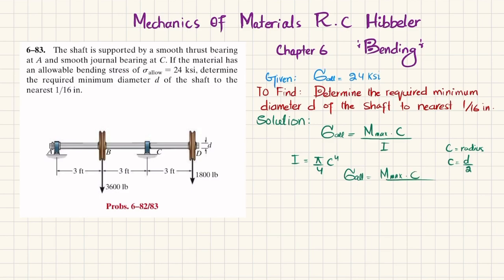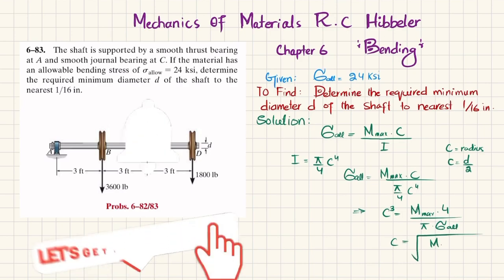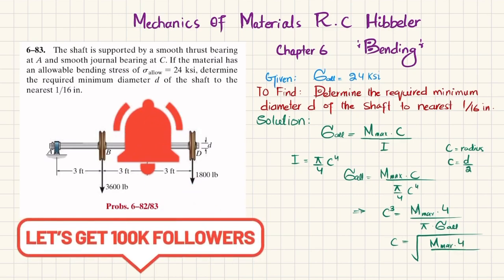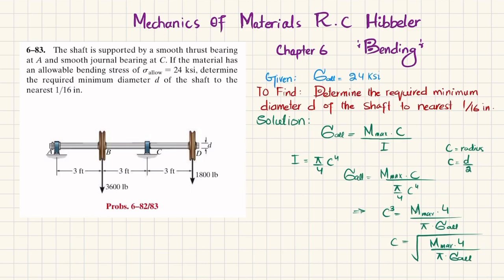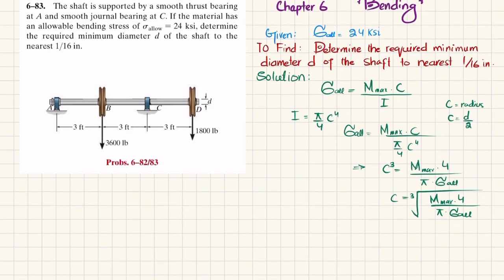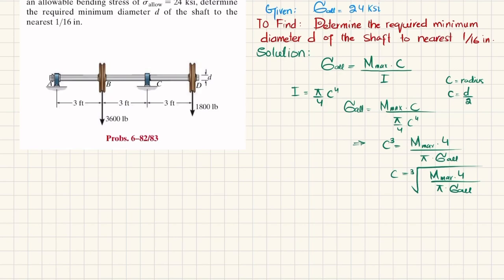When you substitute into the formula, allowable bending stress equals maximum bending moment times c divided by (π/4)c⁴. From here you get c³ equals maximum bending moment times 4 divided by (π times allowable bending stress), and therefore c equals the cubic root of (4 × M_max) / (π × σ_allowable). Once we find c, we can find the diameter.